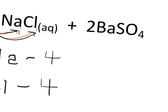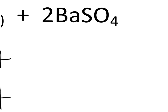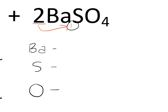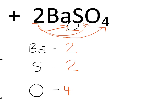We'll quickly finish up with this last practice: we have 2 BaSO₄. We can assume the subscript after Ba for barium is one. There are three elements in this compound: Ba, sulfur, and oxygen. Two times the subscript of one gives us two Ba atoms. The coefficient of two times the subscript of one for sulfur gives us two sulfur atoms. And the coefficient of two times the subscript of four for oxygen gives us a total of eight oxygen atoms.